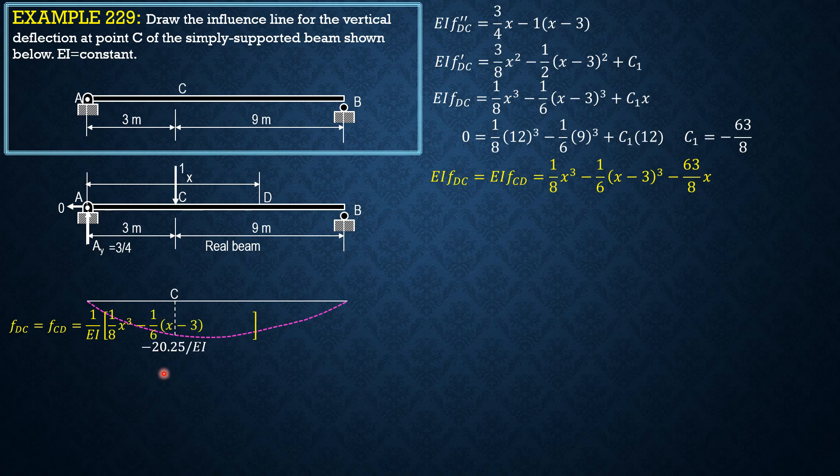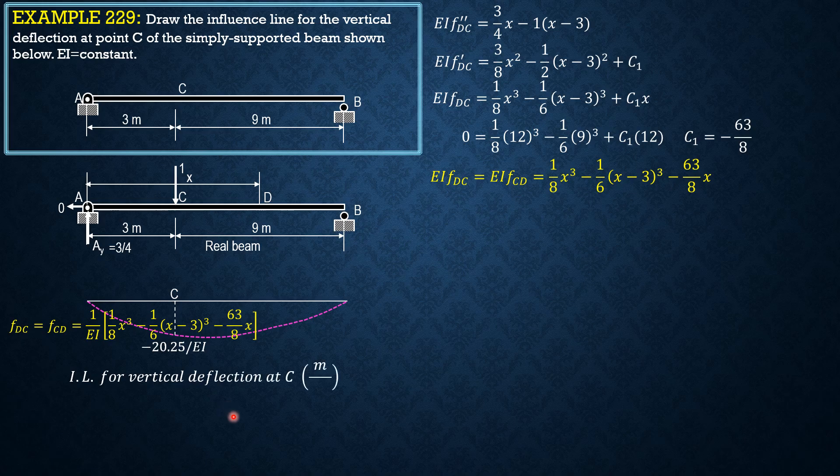When X is 3, the value of FCD at X equals 3, in particular over C, is 1 eighth of 3 cube minus 63 times 3 over 8, so we get negative 20.25 over EI. That's the influence line for vertical deflection at C in meters per kilonewton.